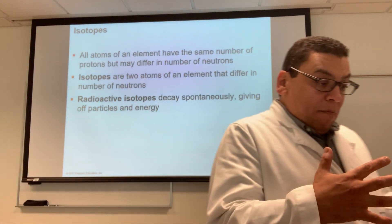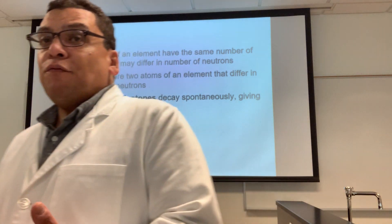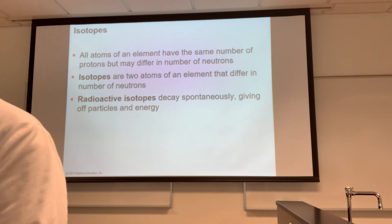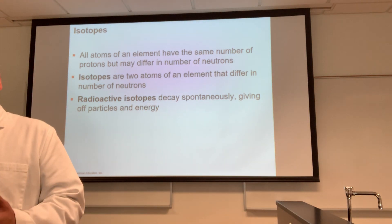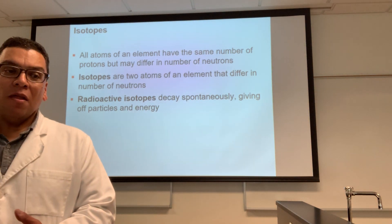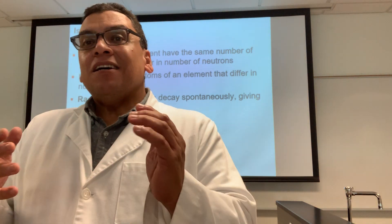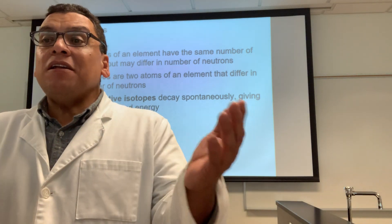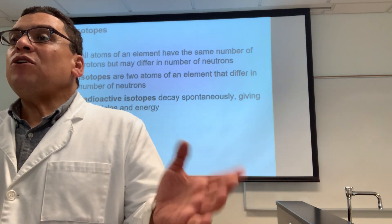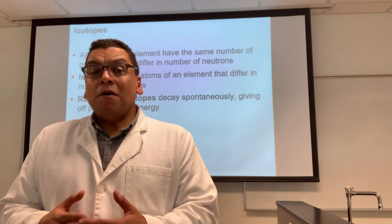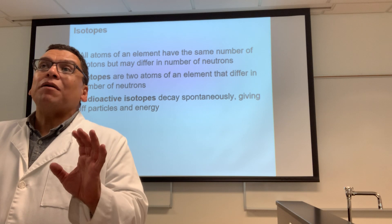Isotopes are the same element in different forms. How are they different from each other? The number of neutrons. For example, carbon-12 has six protons and six neutrons. Carbon-13 has six protons and seven neutrons. So how are they different? It's not the proton number — it is the neutron number. Remember what I told you on Monday: the chemical signature of the element is the number of protons.